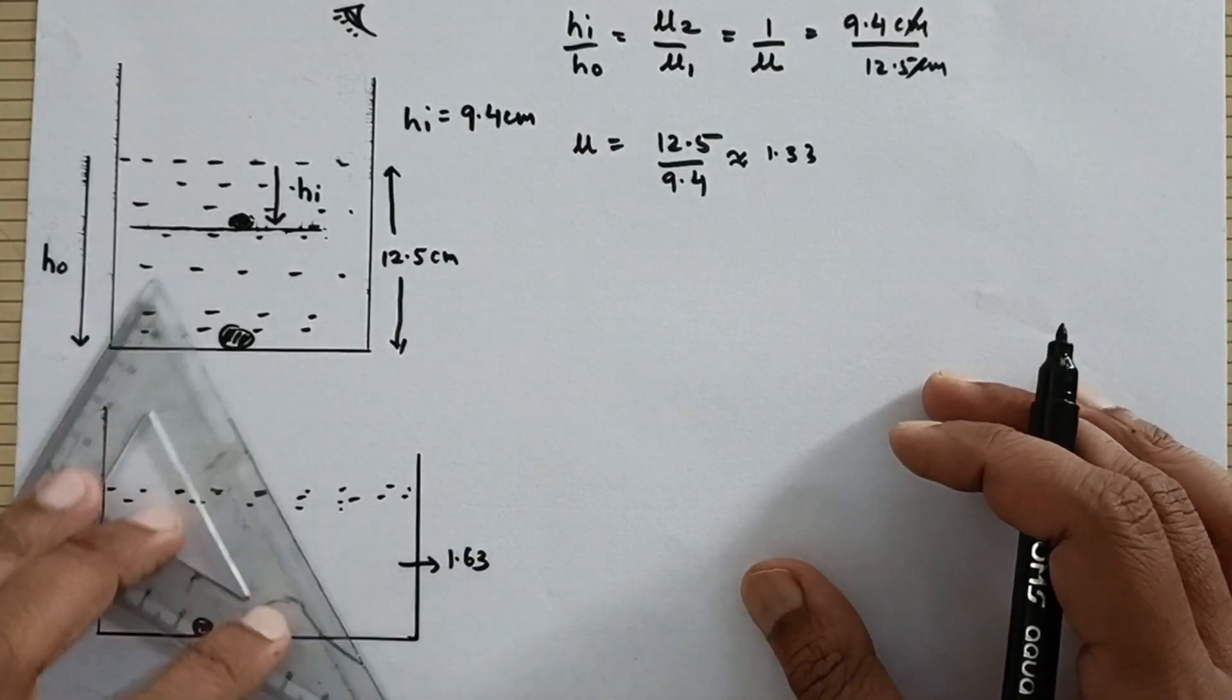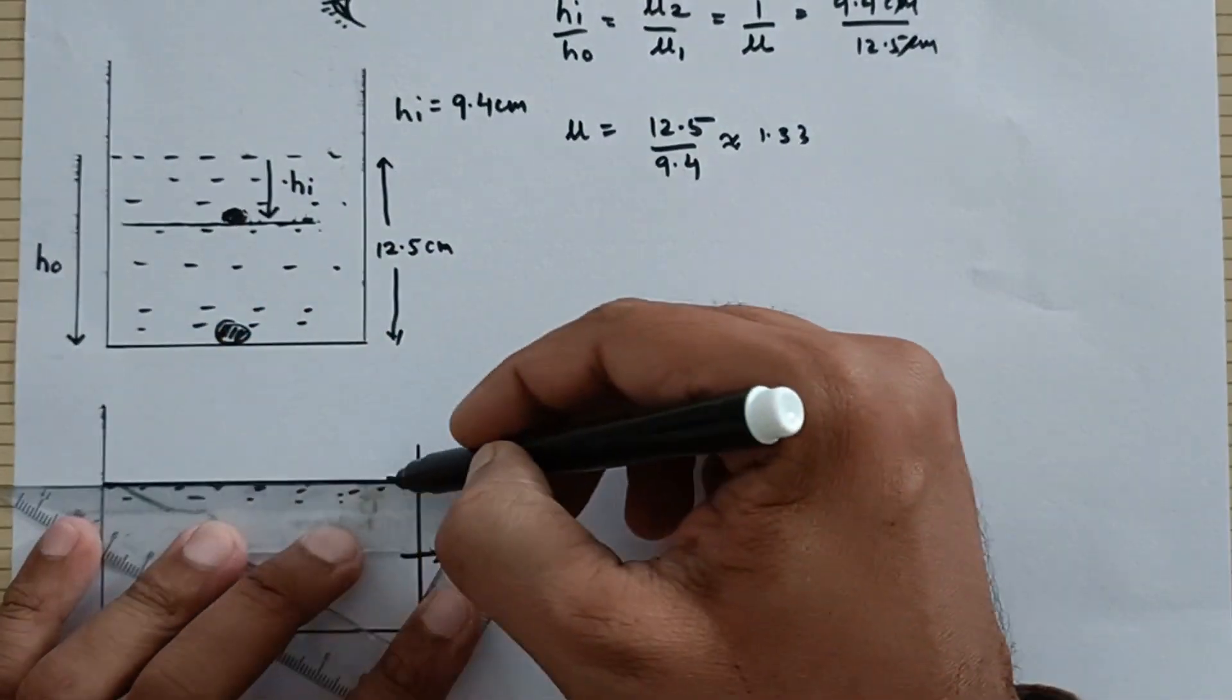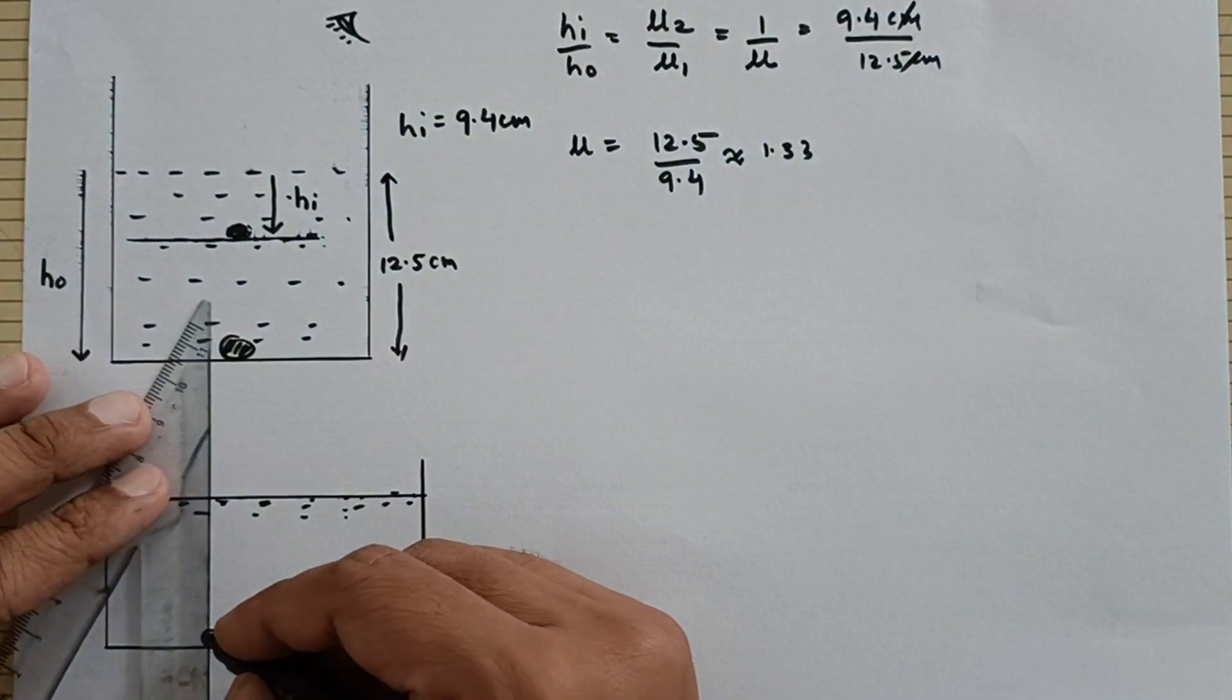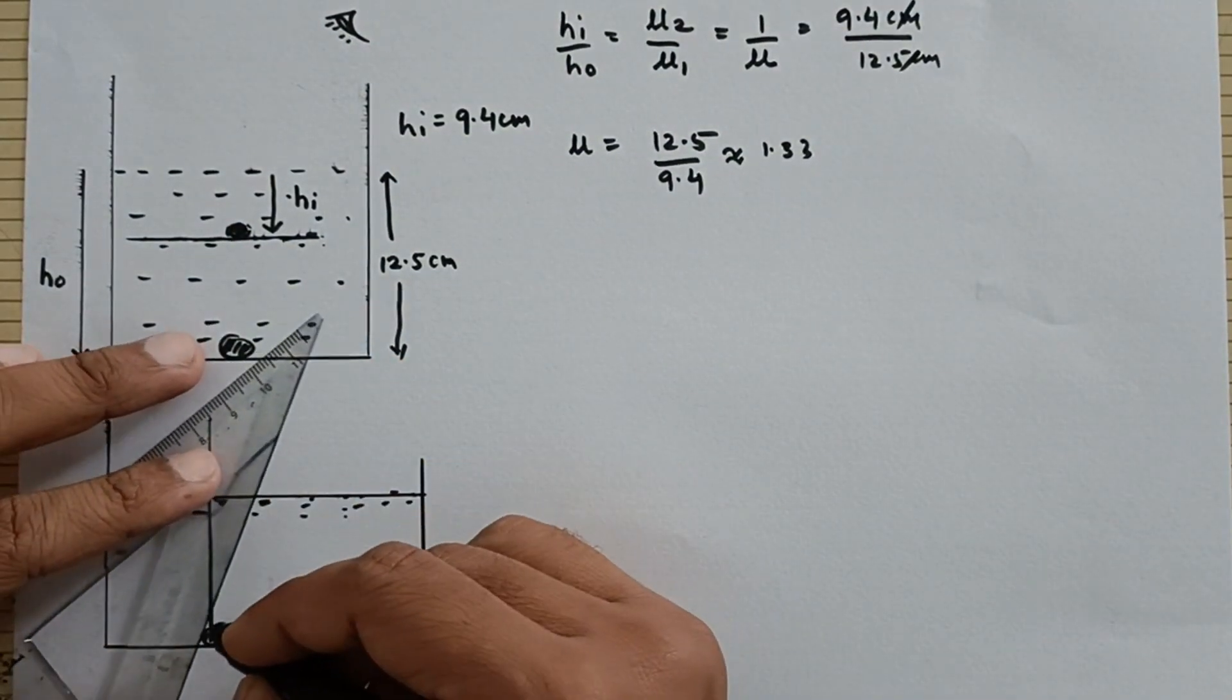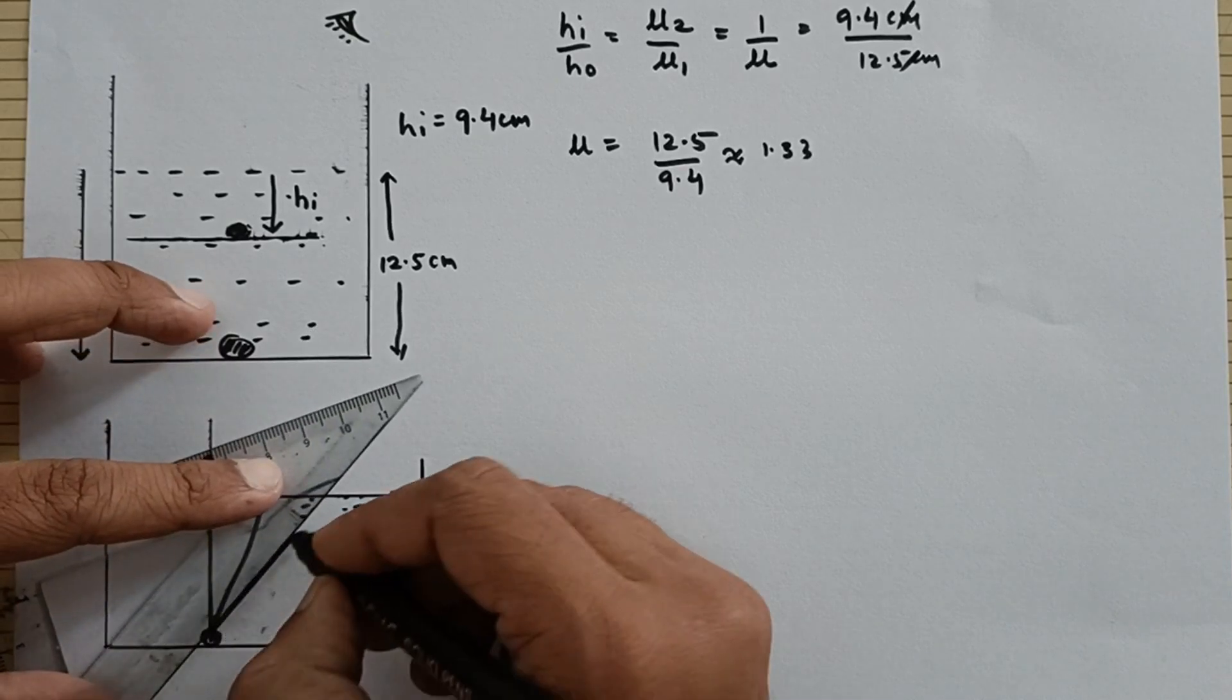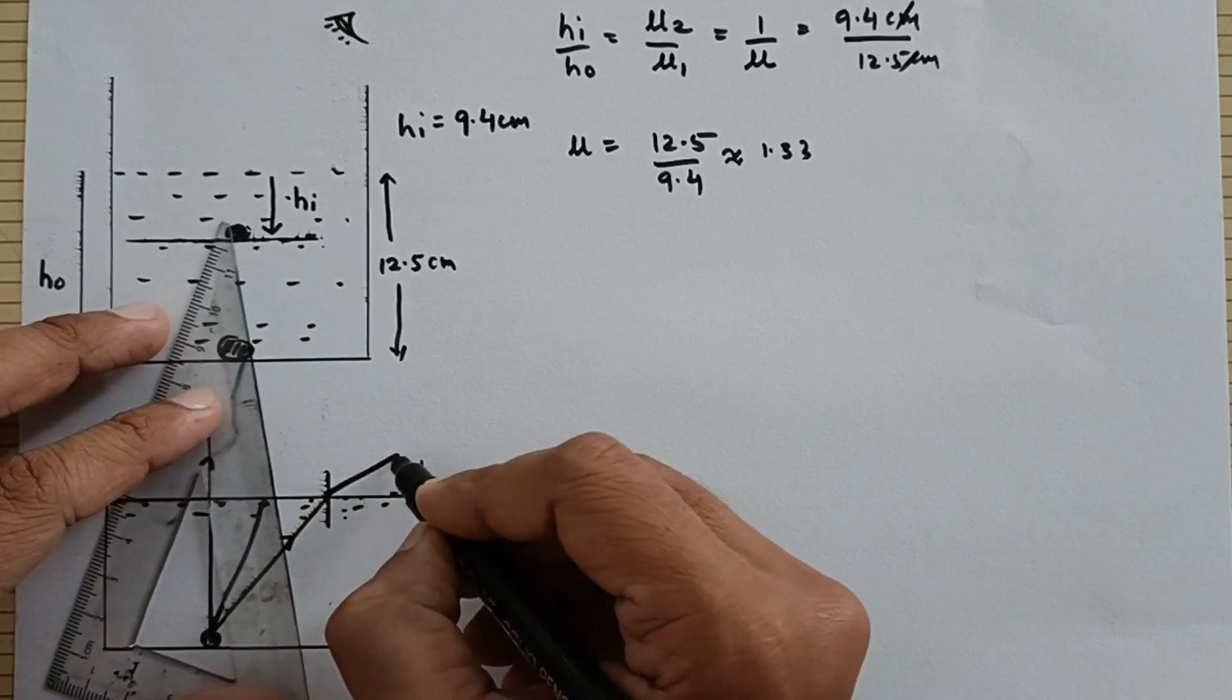So what is the effect that is going to happen? Let me explain it to you with the help of ray diagram first then we will of course apply this simple equation and get the answer. Suppose this is the surface and in the earlier case what used to happen was something like this.